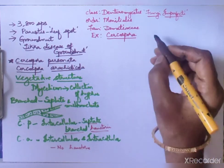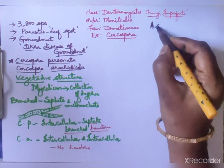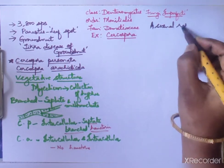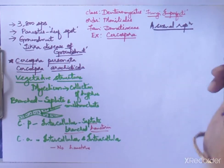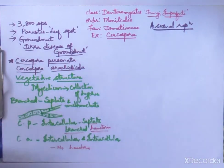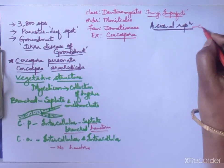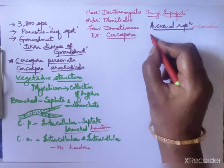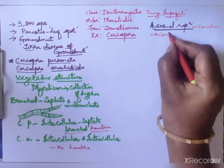Sexual reproduction is completely absent in Cercospora. Asexual reproduction takes place by the formation of conidia, which are borne on conidiophores.